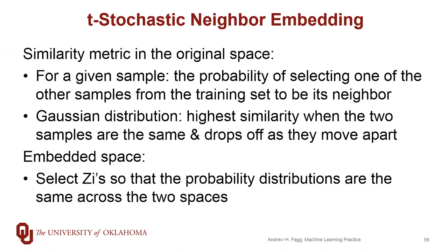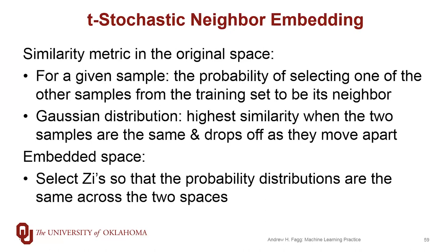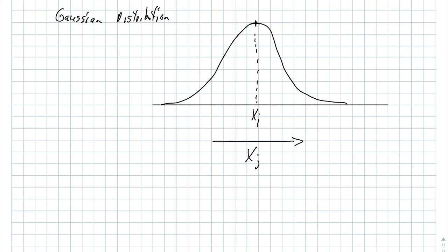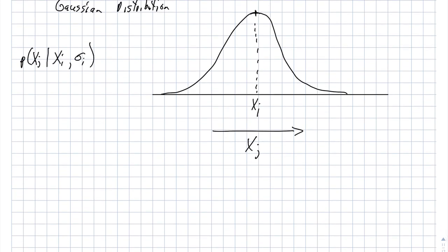The game we play is we try to position the new zi's such that their probability distributions match the probability distributions in the original space. Let's look at the mathematics. First, let's talk about the Gaussian distribution. In scalar space, your Gaussian distribution has a shape that looks something like this, where this is the position of a sample xj, and the mean of our distribution is set to be right at a point in question xi.